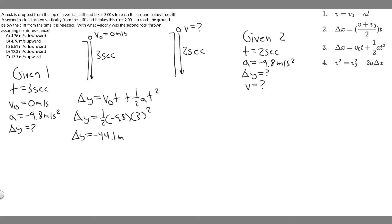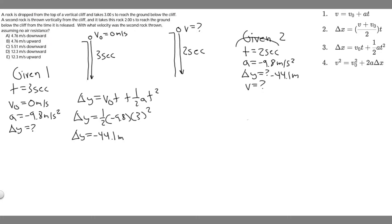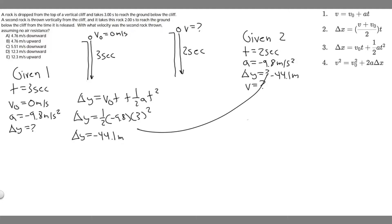Now we know delta y, so we can plug minus 44.1 meters into rock two's equation, because they are the same cliff and have the same change in y. For rock two we now have t equals two seconds, a equals minus 9.8, and delta y equals minus 44.1 meters. We can go ahead and solve for the initial velocity.